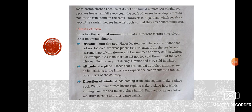The first point that is responsible for this type of climate is distance from the sea. Places located near the sea are neither too hot nor too cold, whereas places that are away from the sea have an extreme type of climate — very hot in summer and very cold in winter. For example, Goa is neither too hot nor too cold throughout the year, whereas Delhi is very hot during summer and very cold in winter.